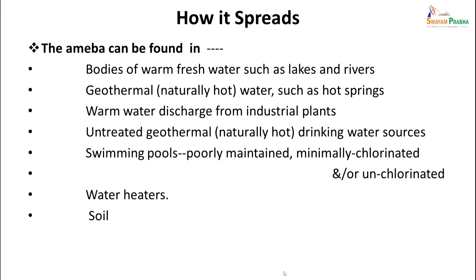The amoeba can be found in bodies of warm fresh water such as lakes and rivers, geothermally or naturally hot water lakes, hot springs, warm water discharge from industrial plants, untreated natural hot drinking water sources, and swimming pools if they are poorly maintained or minimally chlorinated or unchlorinated. They are also seen in water heaters and in soil.